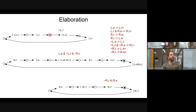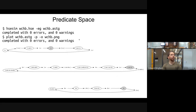For every token we've seen, we can take the state encoding seen at that location and OR it with all other state encodings seen at that location. This generates the predicate space — for each place in the Petri net, we get an understanding of all the possible state encodings seen at that place.